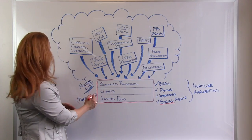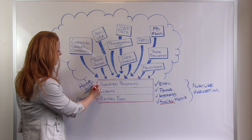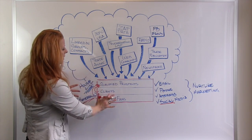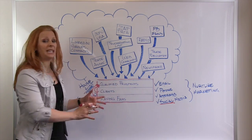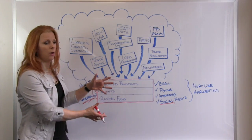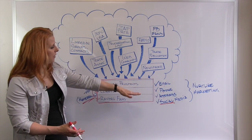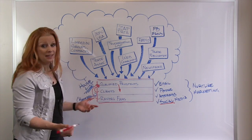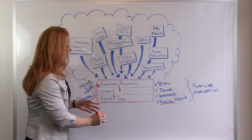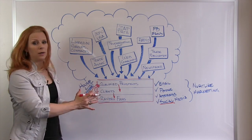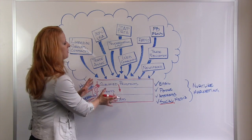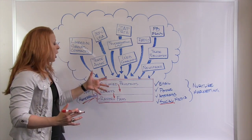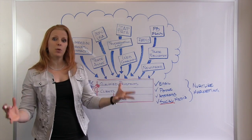One way of building your list is through referrals — getting your raving fans to refer more qualified prospects, and clients to refer more prospects. If done right, this can be a self-fueling list that grows. Then you use nurture marketing — using email, phone, mailing, and social media — to move qualified prospects to become clients, and clients to become raving fans. Most people who come to me have a very small house list — maybe 20, 50, or 100 total — and they're trying to get more prospects on that list.